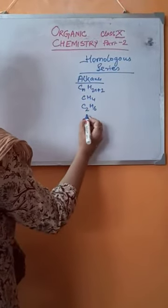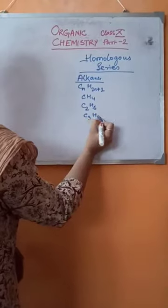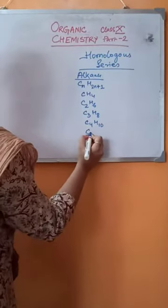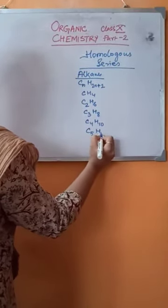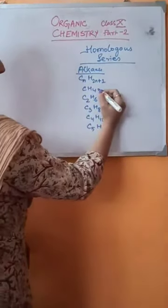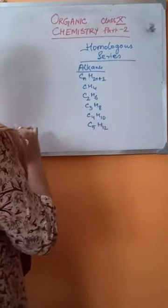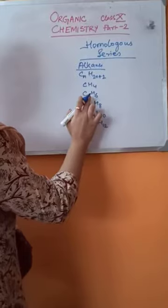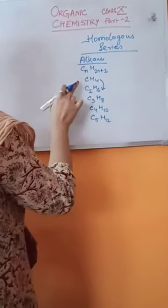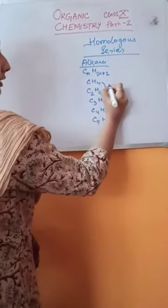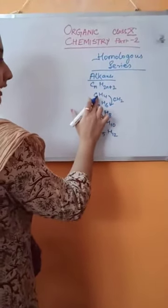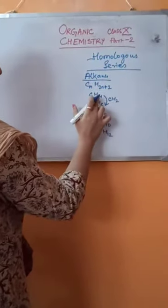Methane, ethane, propane, butane, pentane — and the series continues. Now, in methane we have 1 carbon and 4 hydrogen. But in ethane we have 2 carbons and 6 hydrogen. Methane and ethane differ by a CH₂ group. If we add 1 carbon and 2 other hydrogens to methane, it will form C₂H₆.